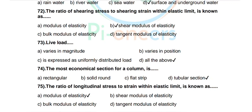Question 72: The ratio of shearing stress to shearing strain within the elastic limit is known as — options: modulus of elasticity, shear modulus of elasticity, bulk modulus of elasticity, tangent modulus of elasticity. Correct answer: shear modulus of elasticity. Question 73: A live load varies in magnitude, varies in position, and may be expressed as a uniformly distributed load. Correct answer: all of the above.